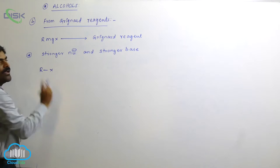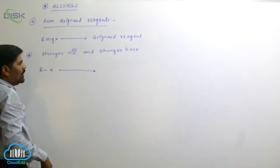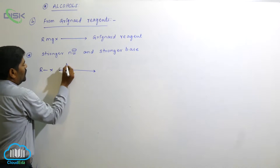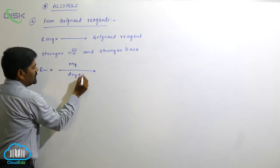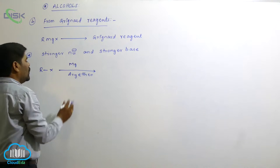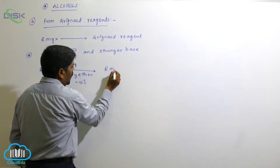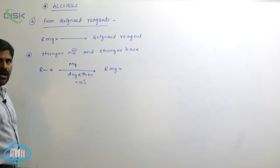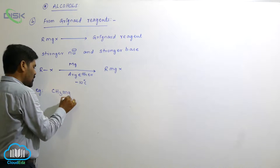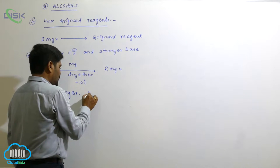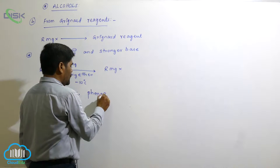When an alkyl halide reacts with magnesium in the presence of dry ether — dry conditions are required — at approximately minus 10 degrees centigrade, it converts into an alkyl magnesium halide.